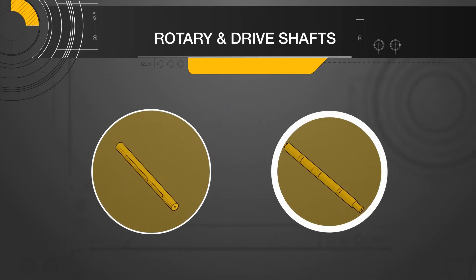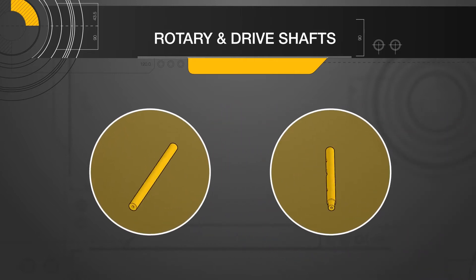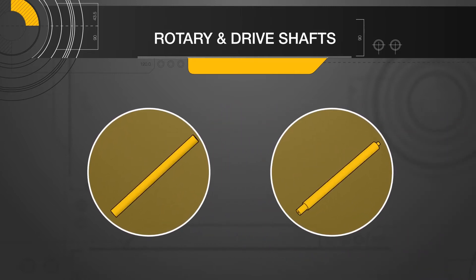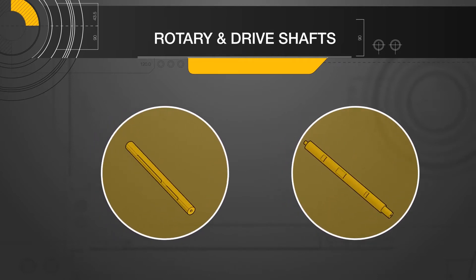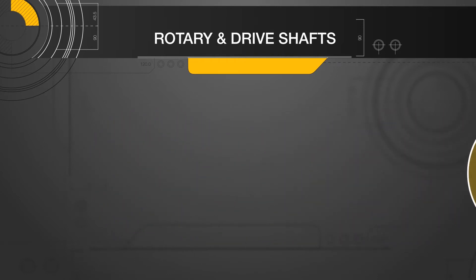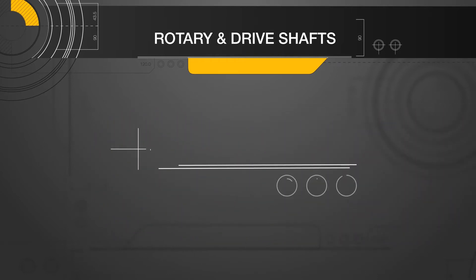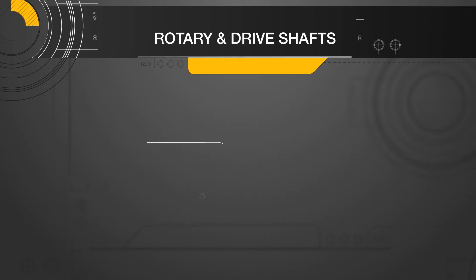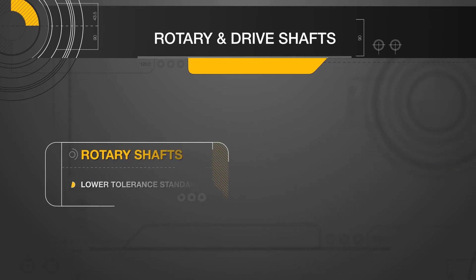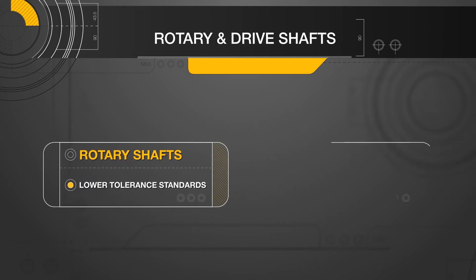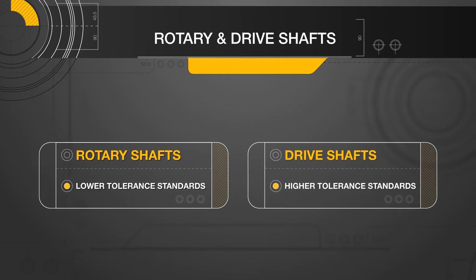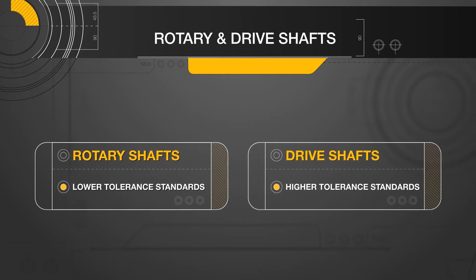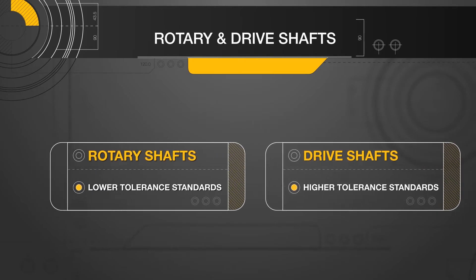These styles apply to both rotary and drive shafts. But what's the difference between rotary and drive shafts? The biggest difference between the two are the tolerances. Rotary shafts have lower tolerance standards, whereas drive shafts are high precision machined with higher tolerance standards.